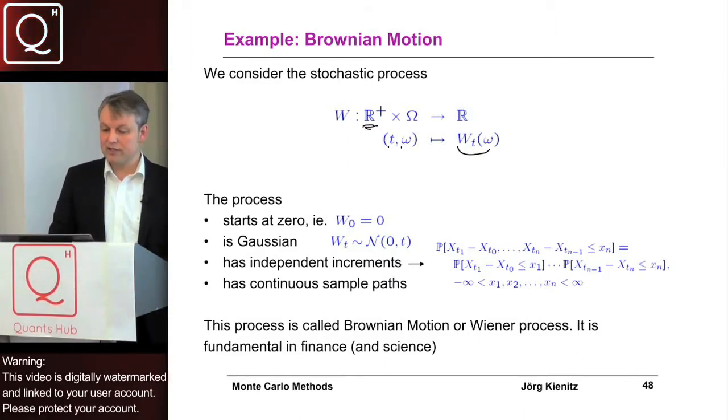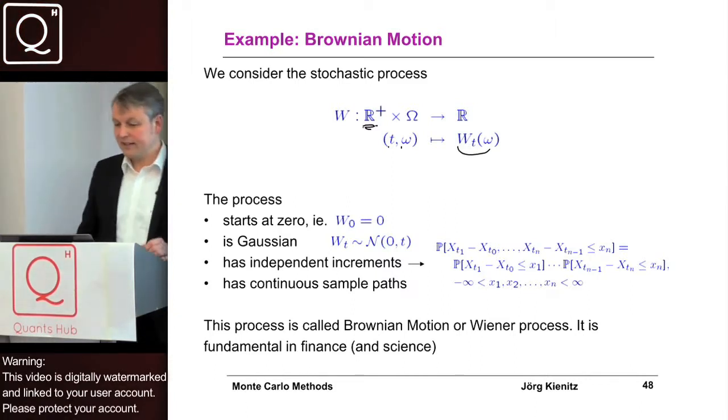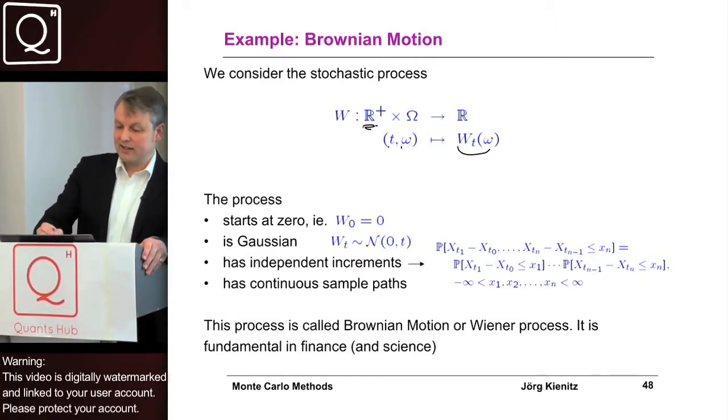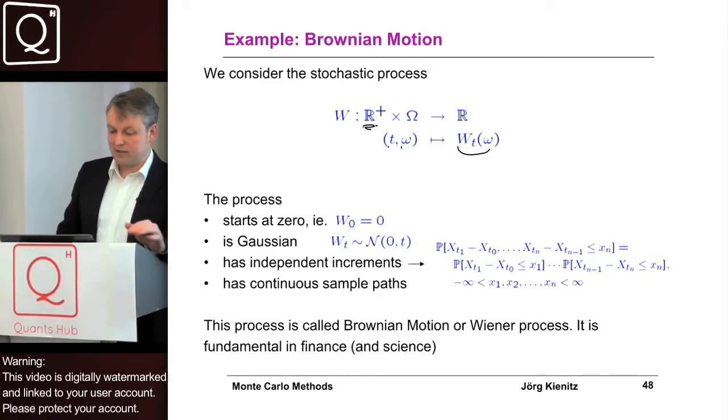What we know from Brownian motion is that it starts at zero. At zero, it is always zero, so it doesn't depend which omega we take—it is always zero.